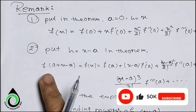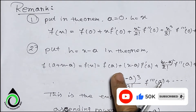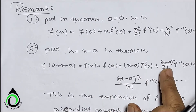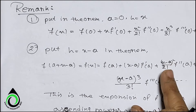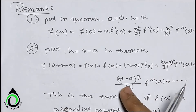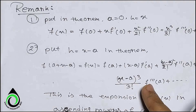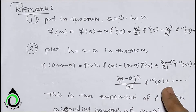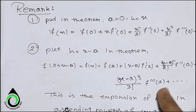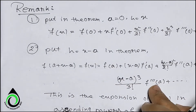We have to use Taylor's theorem: f(x) = f(a) + (x−a)·f'(a) + (x−a)²/2! · f''(a) + (x−a)³/3! · f'''(a) + … We will use this theorem to solve the problem.